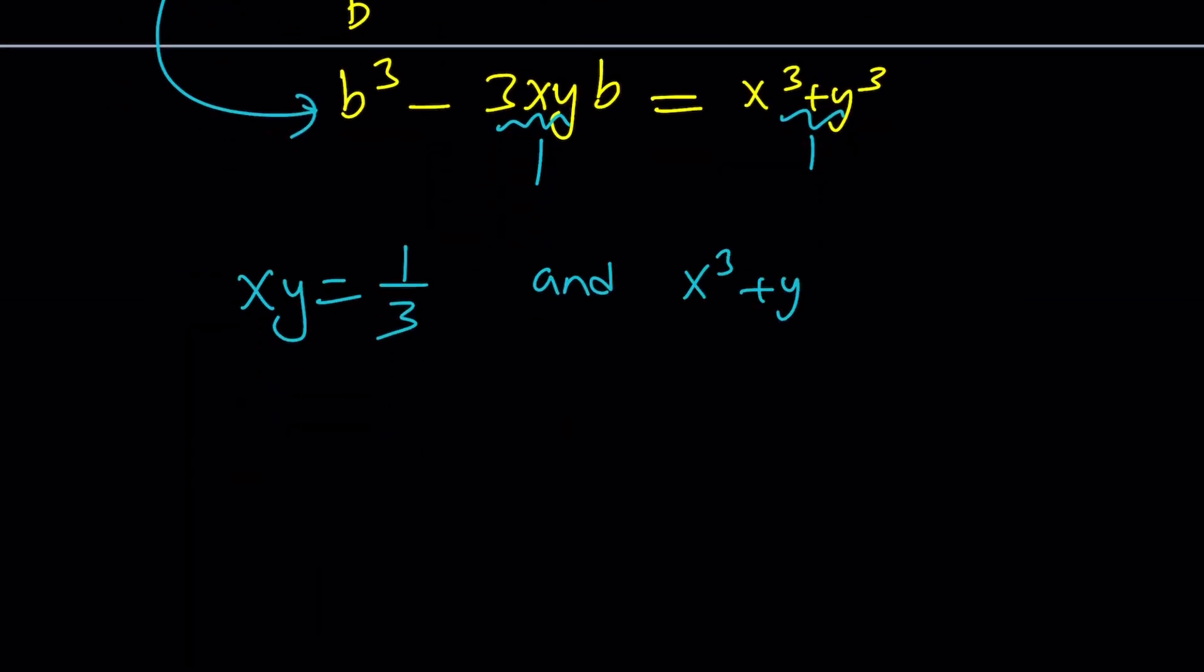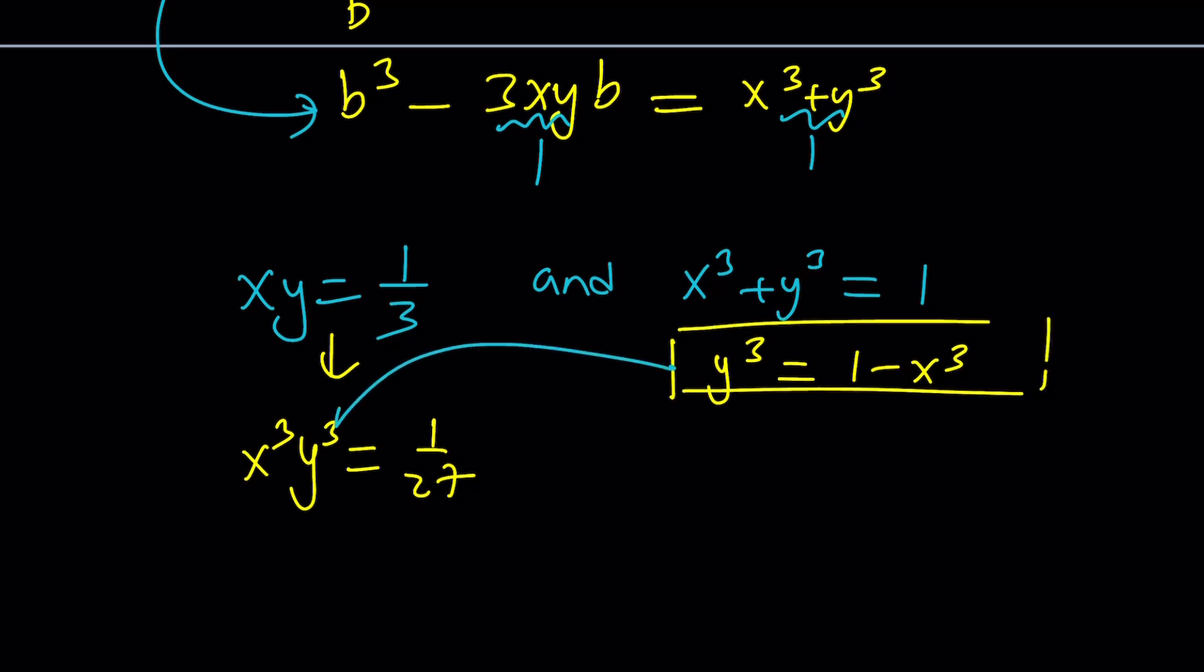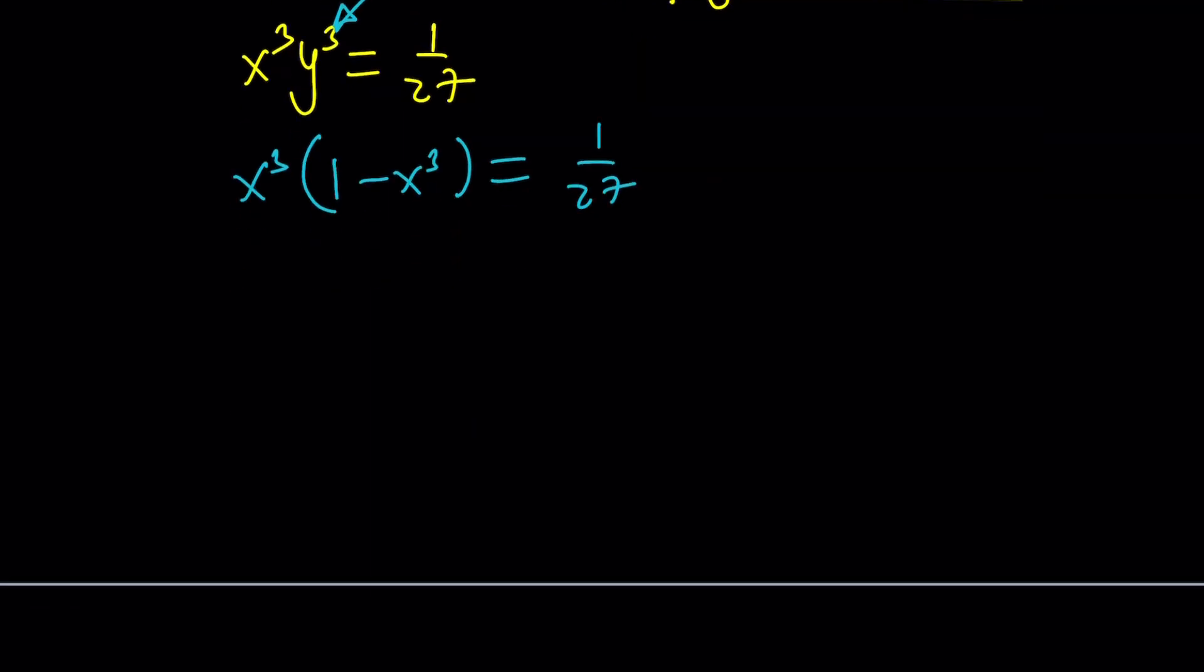So we get a system of equations. Let's cube both sides. We get this. And then if you replace y cubed with 1 minus x cubed, take that and plug in here. You get x cubed times 1 minus x cubed equals 1 over 27. And then you can distribute this and put everything on the right-hand side: x to the 6 minus x cubed plus 1 over 27 equals 0.